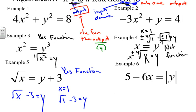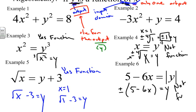In the final example we have absolute value. Remember, absolute value always makes everything positive — plug in a negative and it becomes positive. When we solve absolute value equations, we use plus and minus. So we get two different equations: Y = +5 − 6x and Y = −5 − 6x. Two different values for every input means this is not a function.